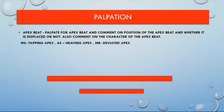In mitral stenosis, the apex beat will have a tapping character. In aortic stenosis, there will be a heaving apex beat. In mitral regurgitation, the apex beat will be displaced. These are important characteristics related to valvular disease.